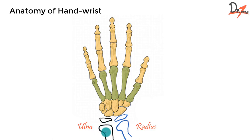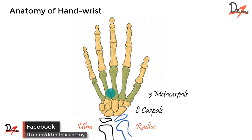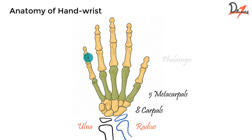We have the distal end of the long bones of the forearm, that is the ulna and the radius. Then we have the carpals — eight small irregularly shaped bones. Then we have the metacarpals, which are five tiny long bones. Then we have the phalanges, which are small bones that form our fingers, and each finger has three phalanges, except the thumb which has just two.